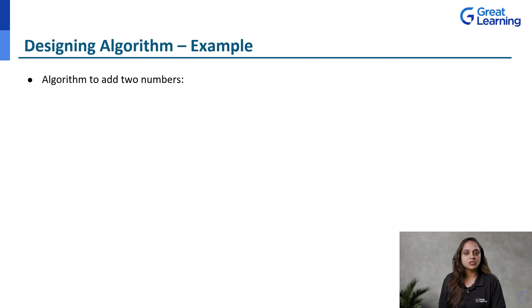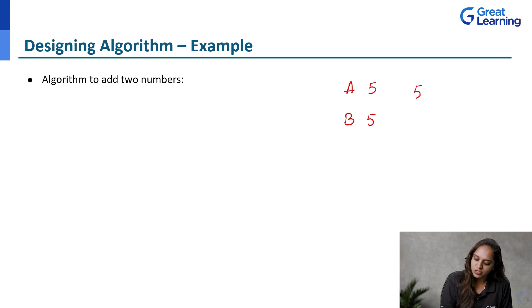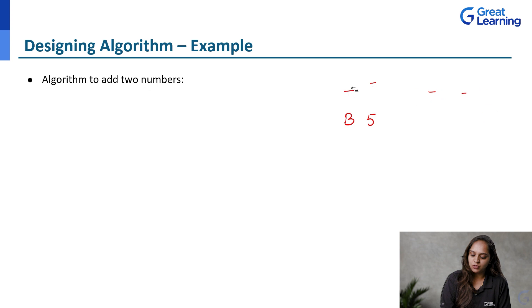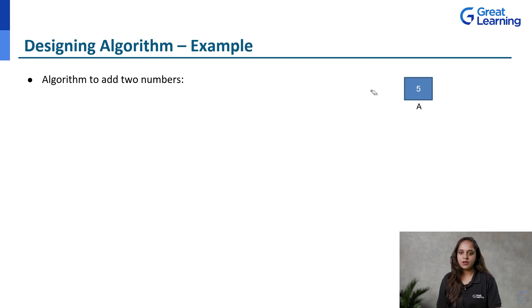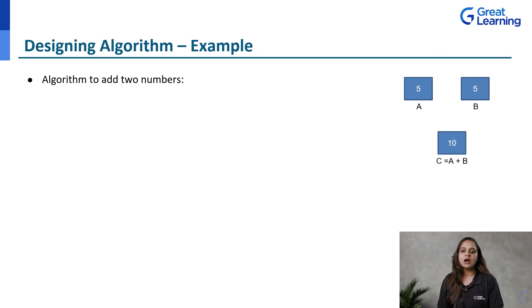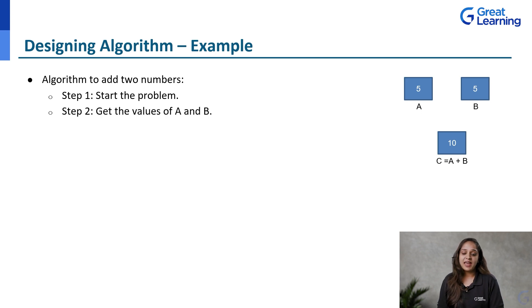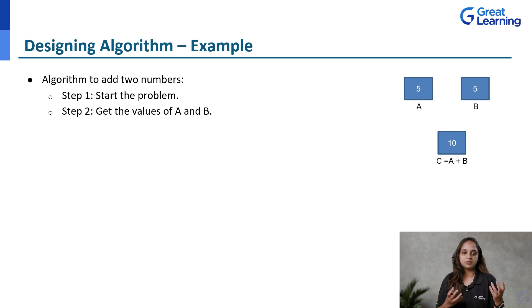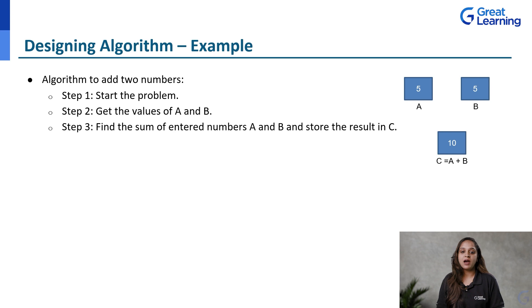Now let us write the algorithm to add two numbers. If you have two numbers stored in locations A and B, our main intention is to add the two numbers and store the result in a different location C. We have value 5 in A and value 5 in B, and our intention is to add them and store the result in C. The first step is always the start step. Then you have to read the values of A and B given by the user and store them in locations A and B. The next step is to add A and B and store the result in C.